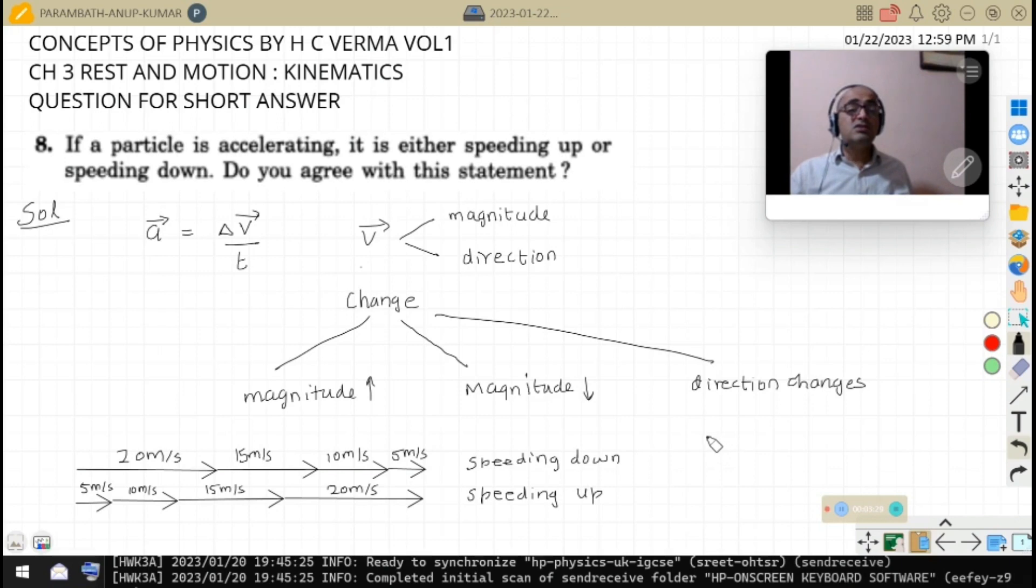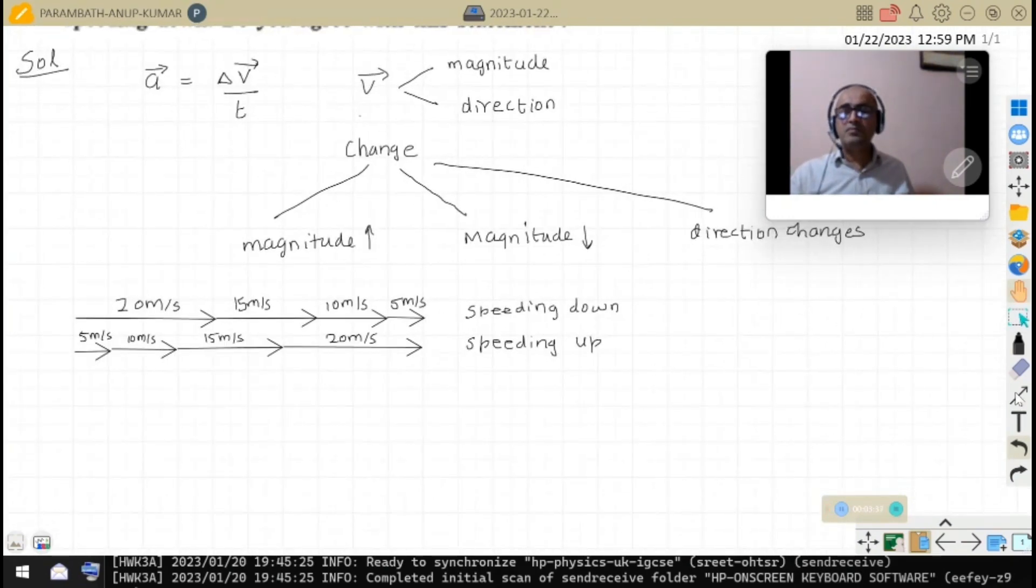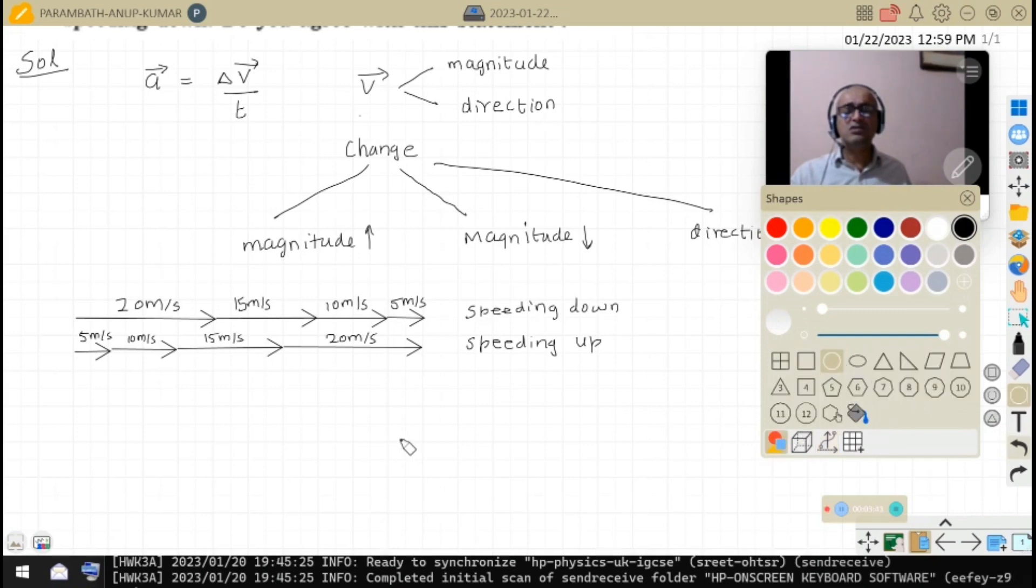But there is a situation in which the speed may be constant, but still it is accelerating. Which is that, let us see. That happens in case of a circular motion.